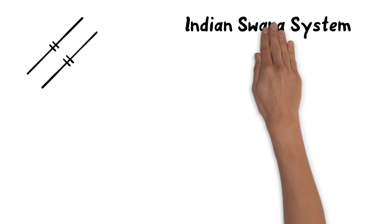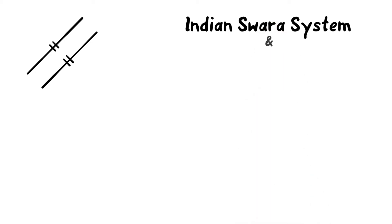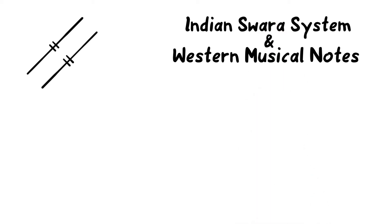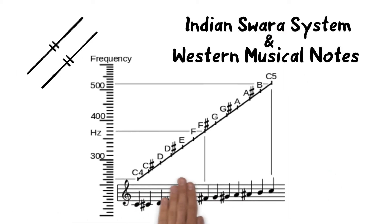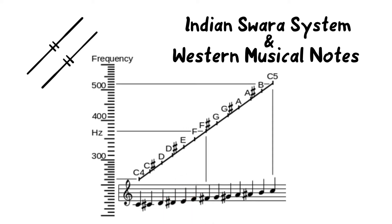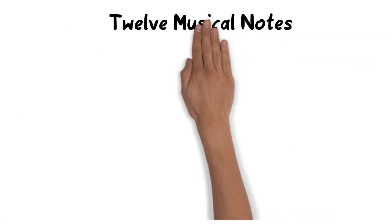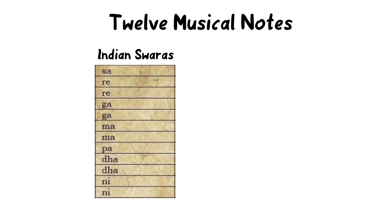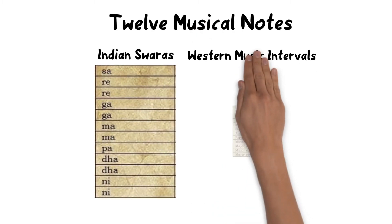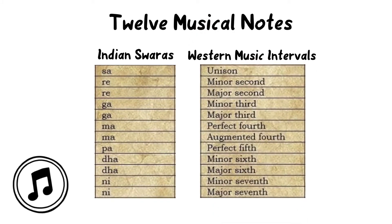Now let's draw parallels between the Indian swara system and Western musical notes. Both systems essentially have the same 12 musical notes. The 12 swaras in Indian music correspond to the 12 intervals of Western music theory.